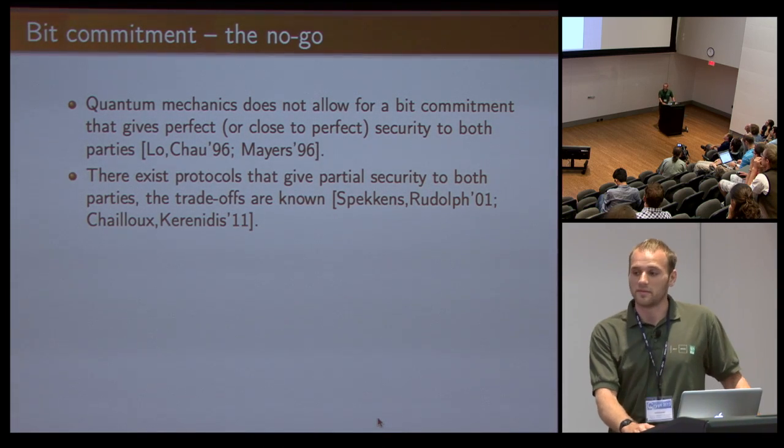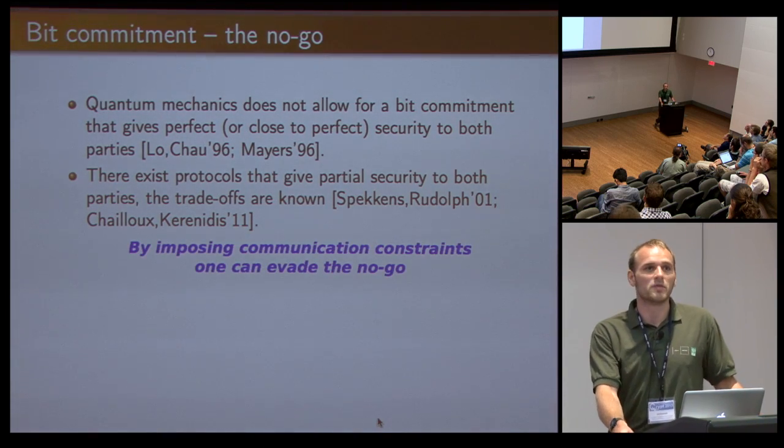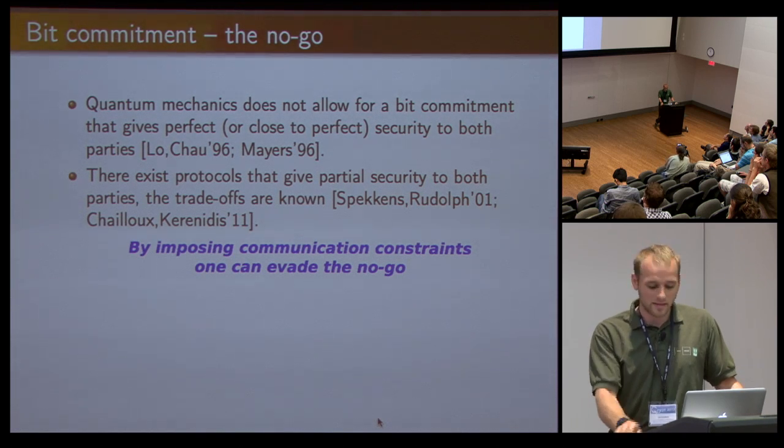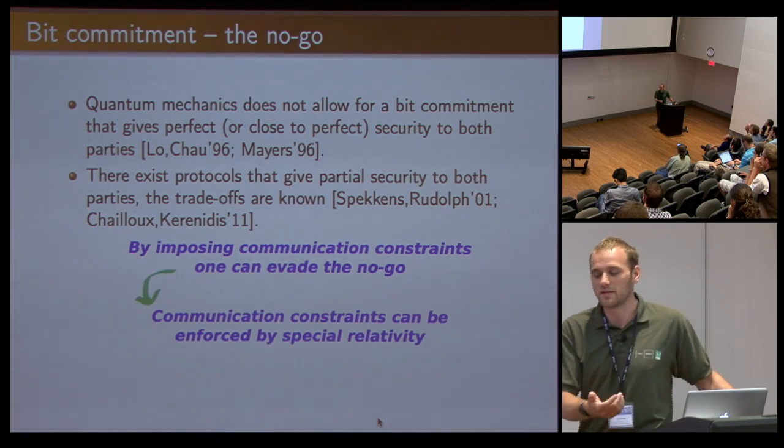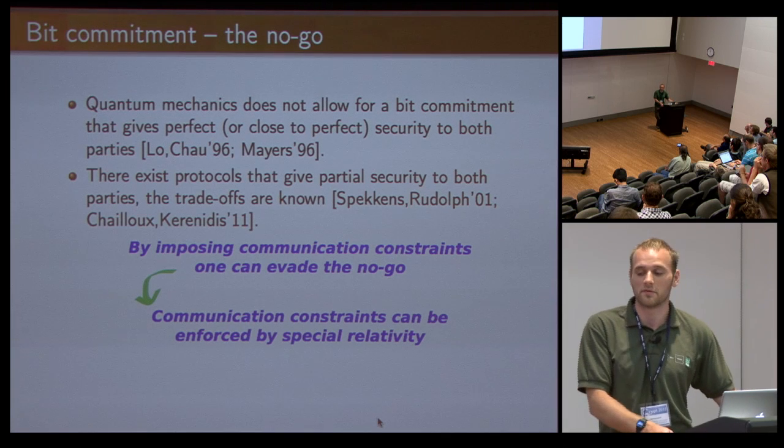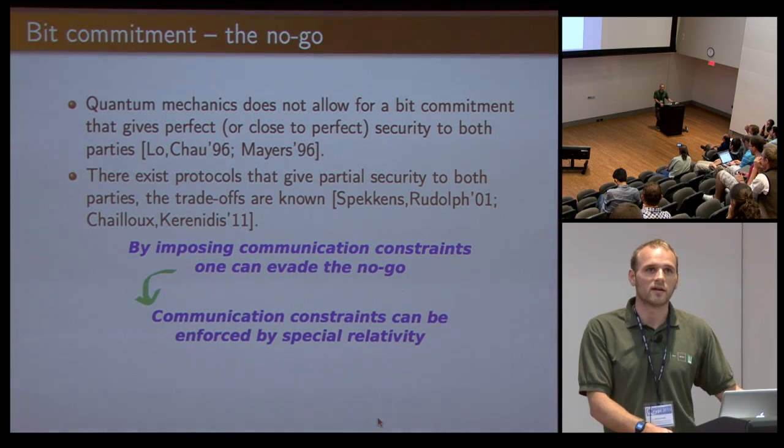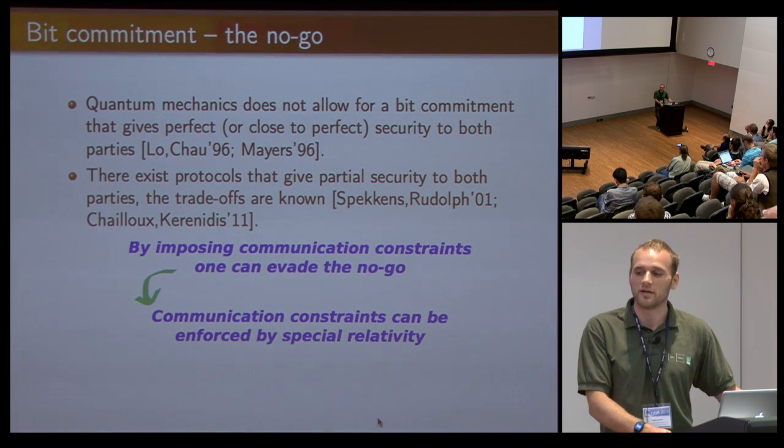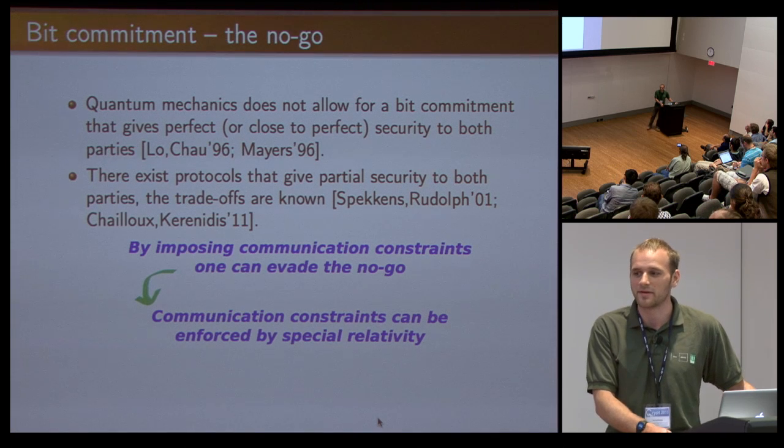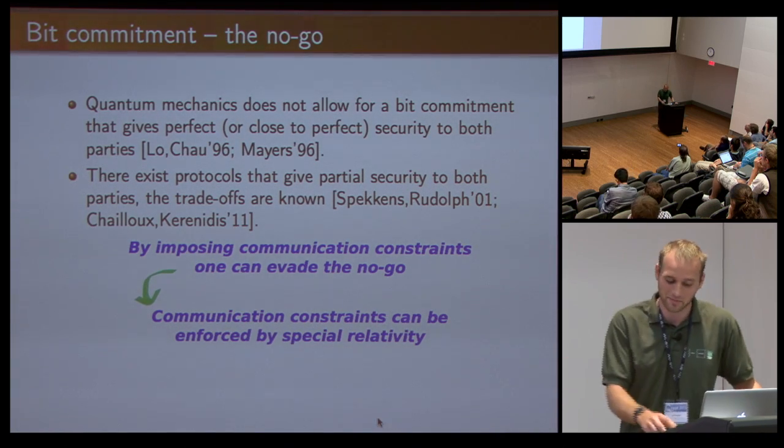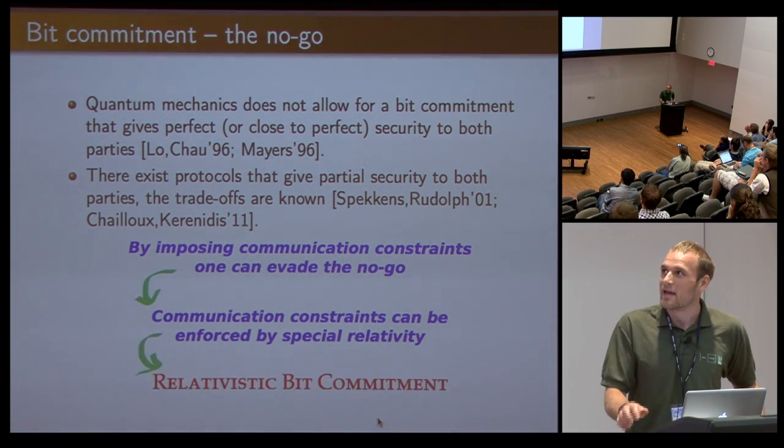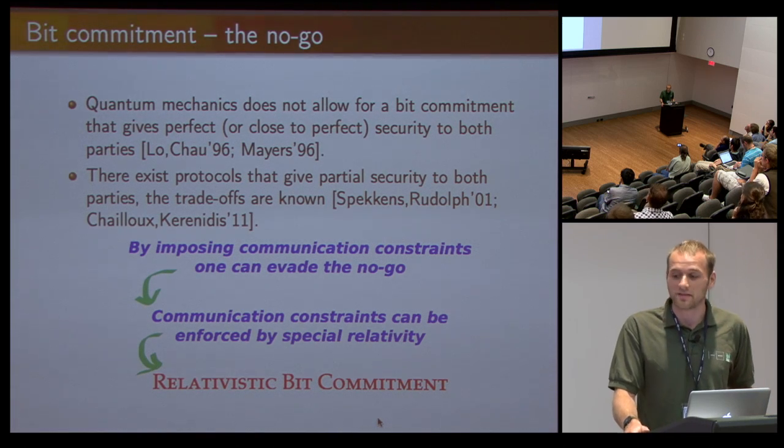The idea is that if you want to evade the no-go theorem, you can do it by imposing communication constraints. These communication constraints can be motivated or derived from special relativity. If two things happen at far away locations and are space-like separated, maybe they cannot communicate. This is essentially the idea of relativistic bit commitment.